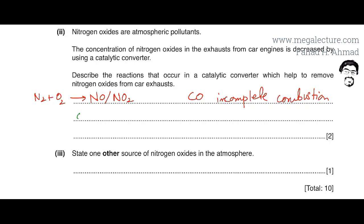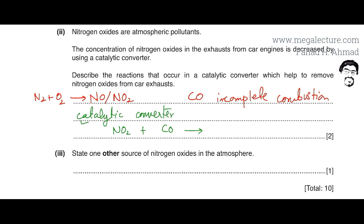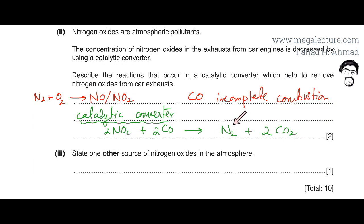When these gases pass through the catalytic converter, it converts them into less harmful products. For example, NO2 reacts with carbon monoxide in the catalytic converter: NO2 is converted into nitrogen gas, while carbon monoxide is oxidized to CO2. The balanced reaction is: 2NO2 + 2CO → N2 + 2CO2. In summary, the oxides of nitrogen are reduced to nitrogen, and carbon monoxide is oxidized to carbon dioxide.